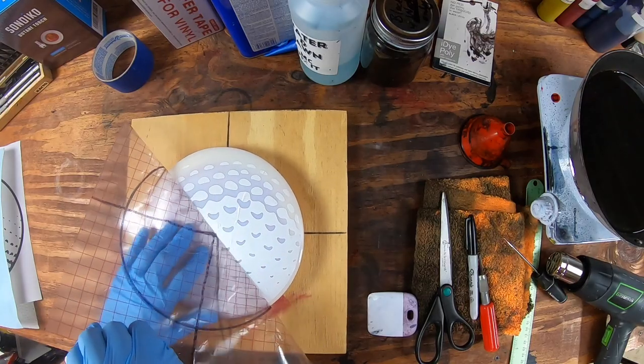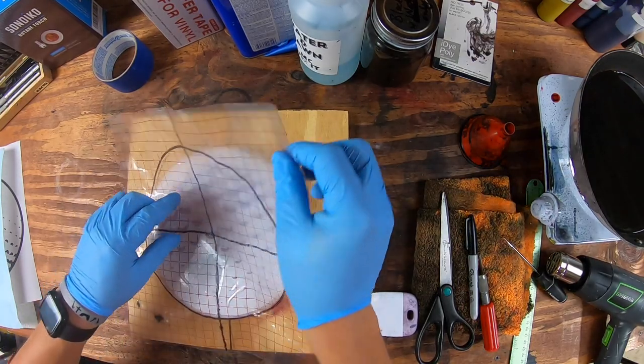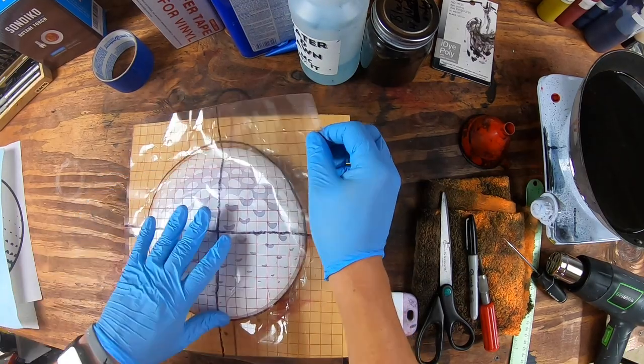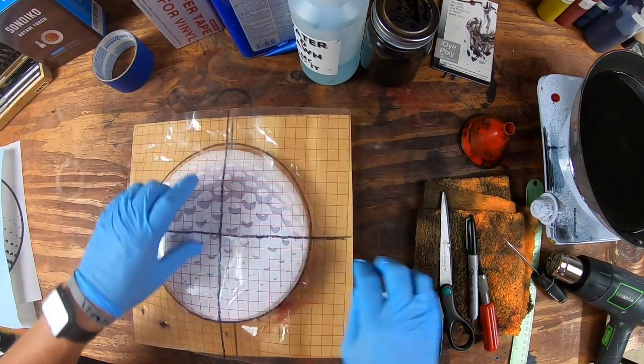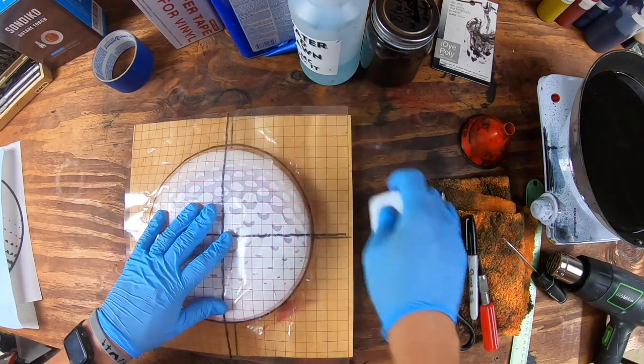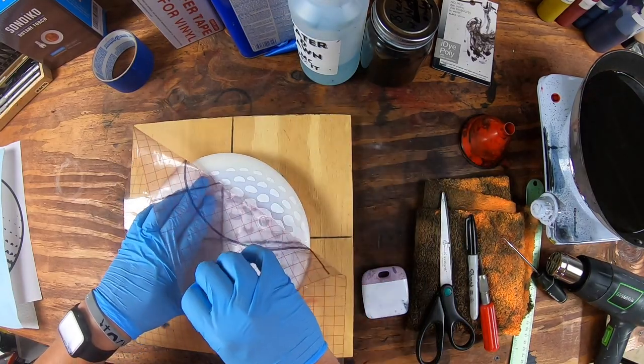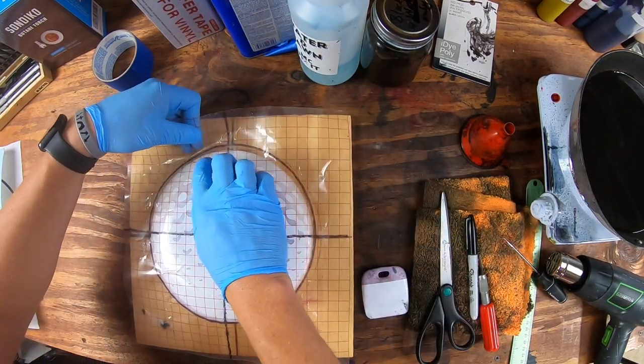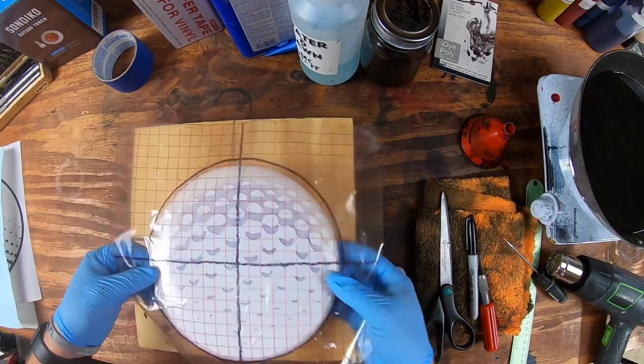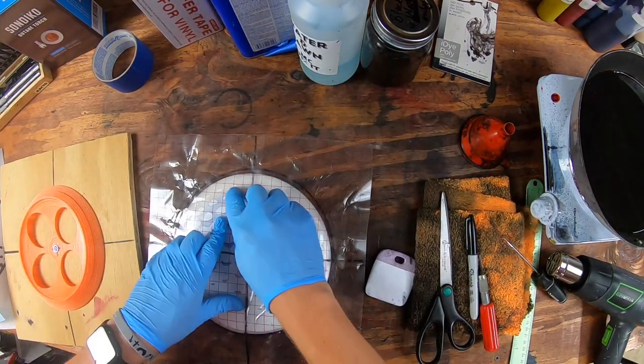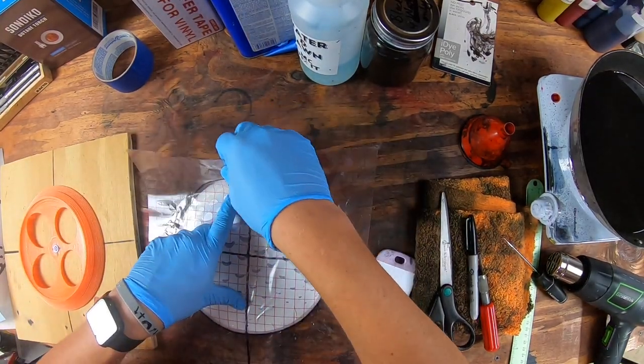And so as you're peeling this, it should come off pretty good. Just noticed that little one did not come off well. I'm gonna go ahead and remove it off of here. Sometimes having a little bit of pressure helps.